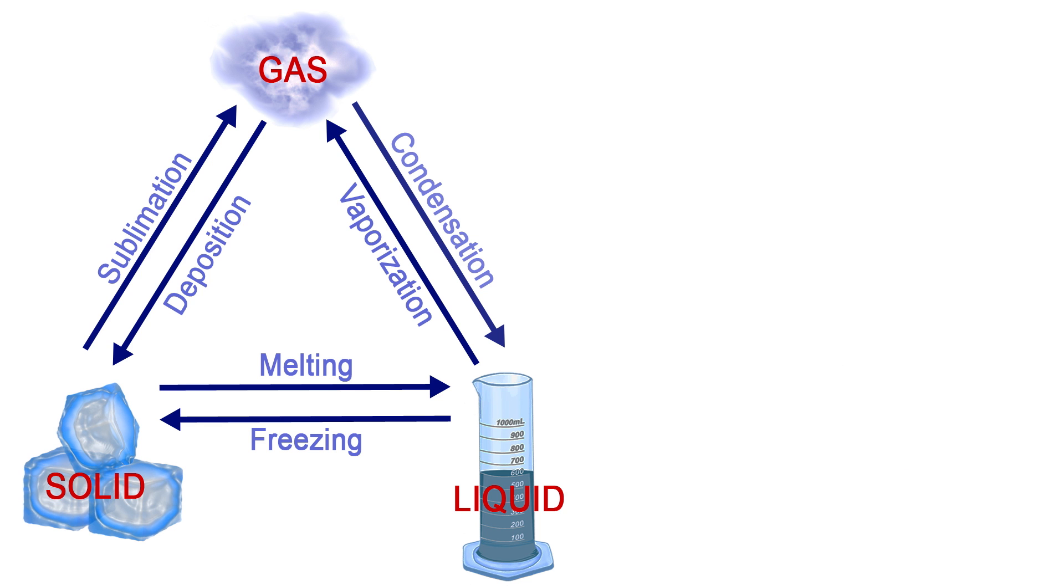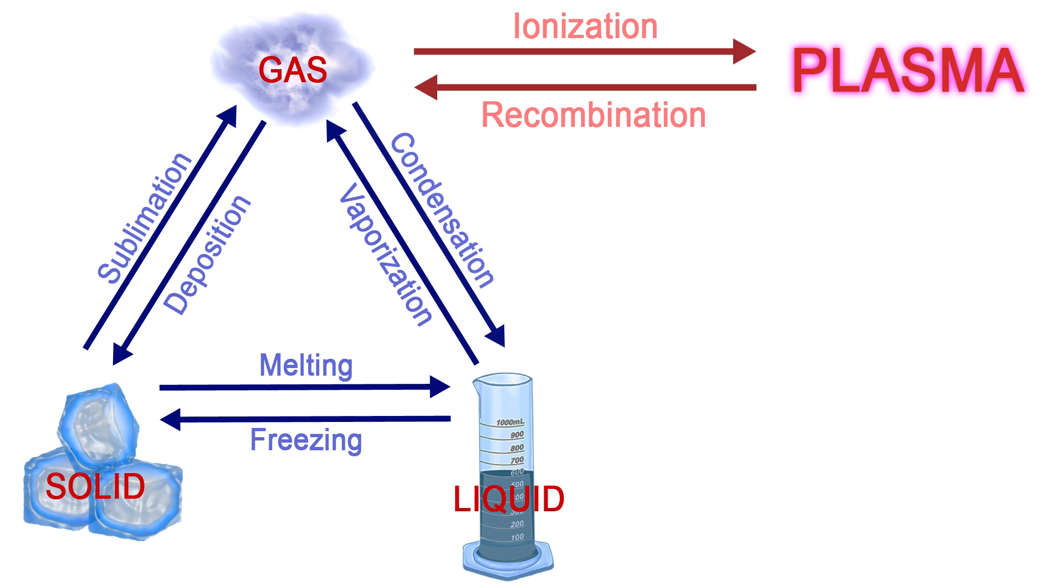In astronomy, materials are often heated to such high temperatures that electrons are stripped away and form a plasma, so we really have four stages of matter.